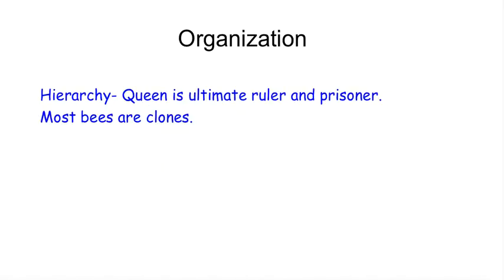So how are things organized? Well, there's a hierarchy. Interestingly, is the queen at the top? In one sense she is, but in another sense the queen is basically kept as a prisoner by all the other bees. She is simply trapped inside the hive and used to breed, breed, breed — the worker bees haul her around whenever they want. Most of the other bees are pretty much clones, so their genes are represented by that queen.